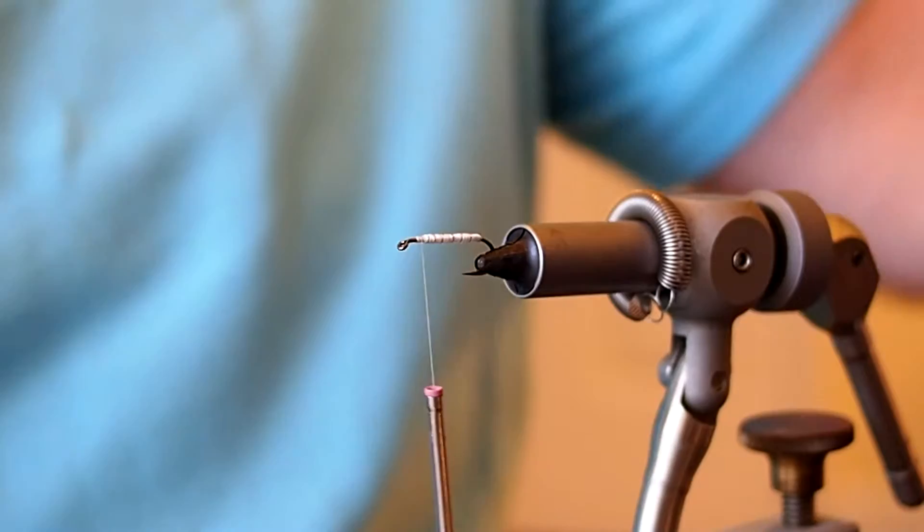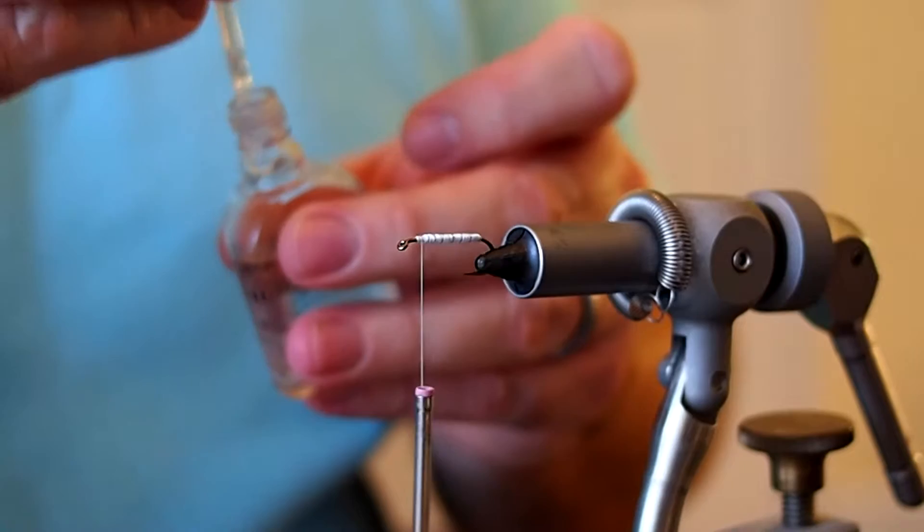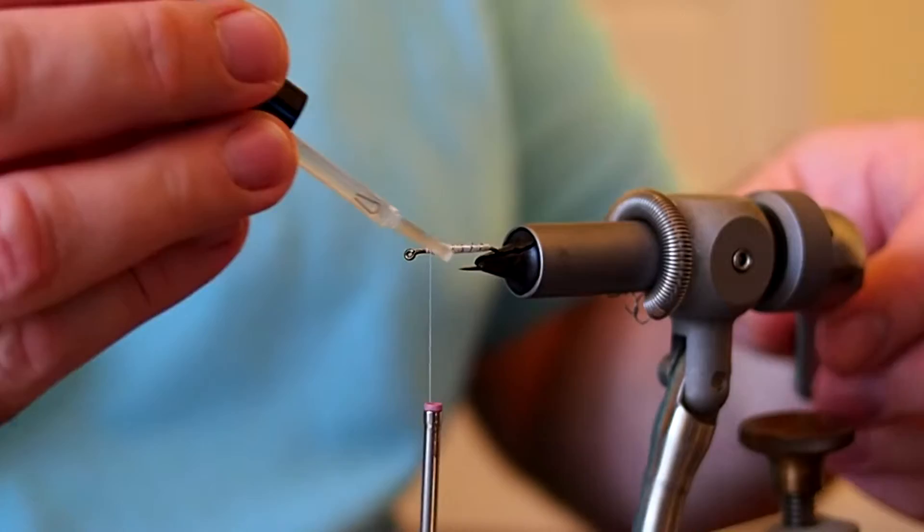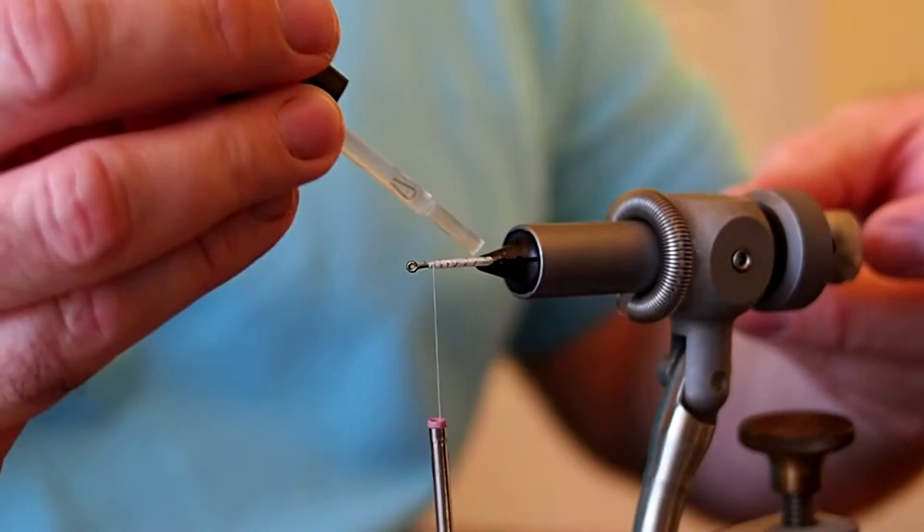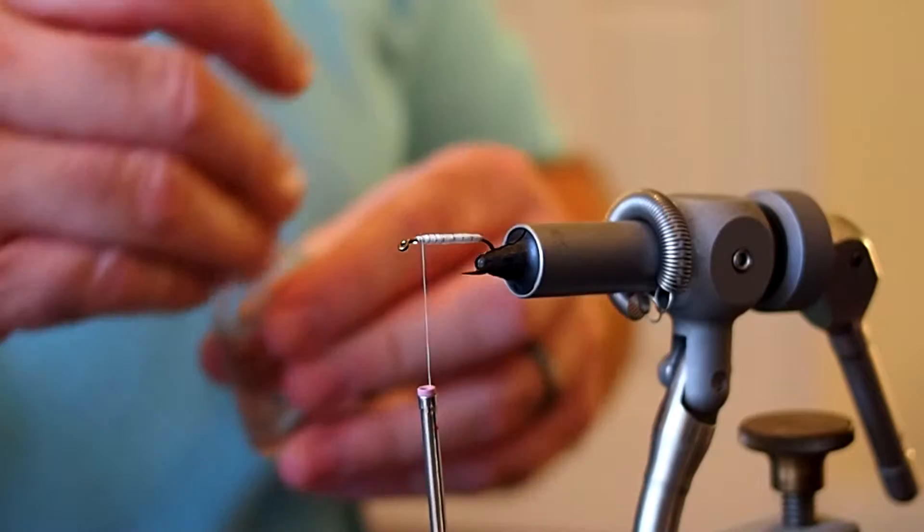Now to protect our floss and tinsel ribbing I like to just touch the body with some Sally Hansen's. It also kind of gives it a translucent look. We'll just go ahead and let that dry.